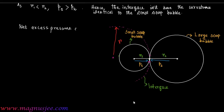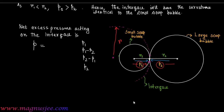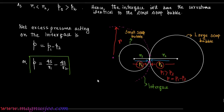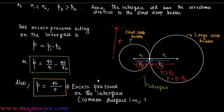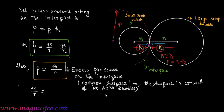The net excess pressure acting on the interface is p, which equals p1 minus p2, since p1 is greater than p2. Therefore, p equals 4s divided by r1 minus 4s divided by r2. Also, p equals 4s divided by r, which is the excess pressure acting on the common surface — the interface of the two soap bubbles in contact.